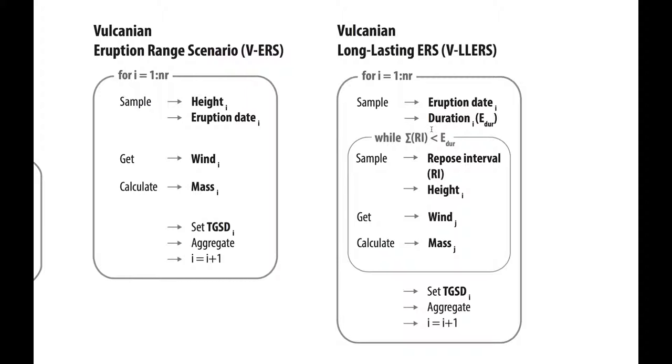For each of this thousand Vulcanian cycles we're going to sample repose intervals, and this is very critical for these Vulcanian eruptions. We're going to keep on sampling repose intervals until the sum of these repose intervals exceed the duration that we set here. We have a T0, we sample the repose interval so it's T0 plus this RI for which we sample the height, we get the wind, we calculate the mass as we did before.